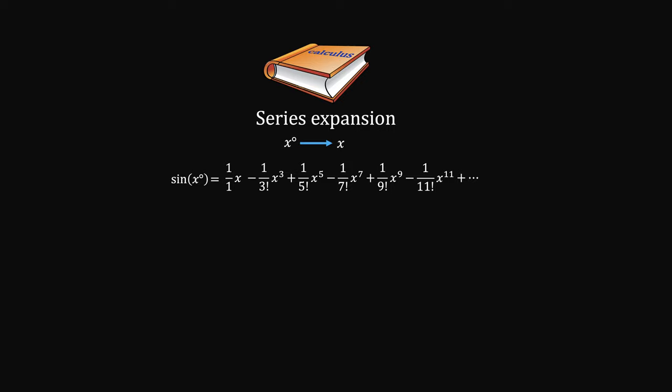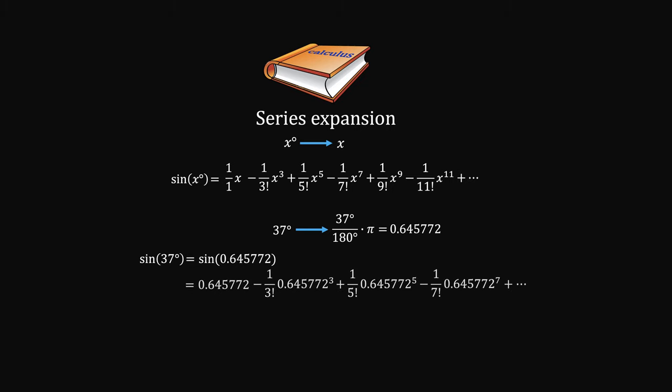For example, say we want to know sine 37 degrees. You divide it over 180, then multiply by pi. This is the 37 degrees in terms of radians. Then you plug it into the series formula. You'll only need a few terms to get pretty good precision. It's roughly 0.6018.